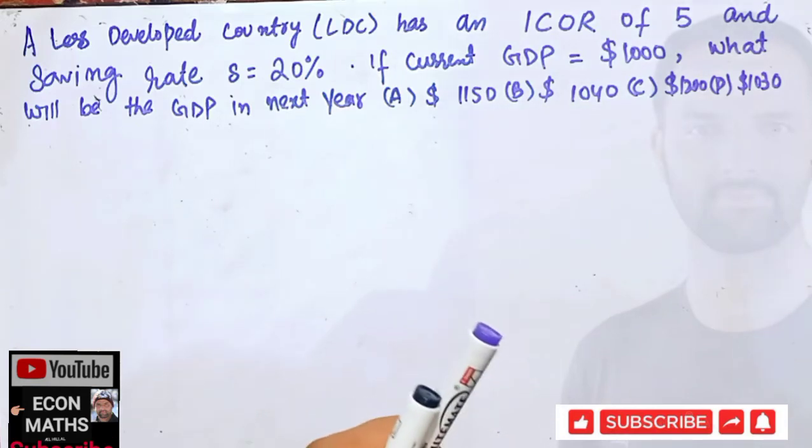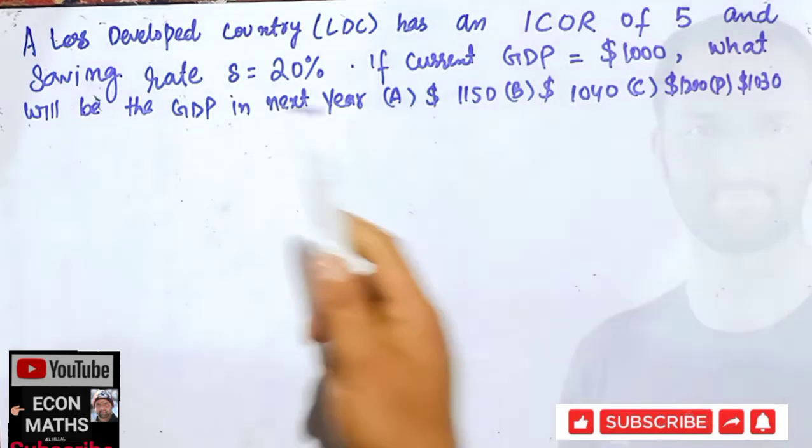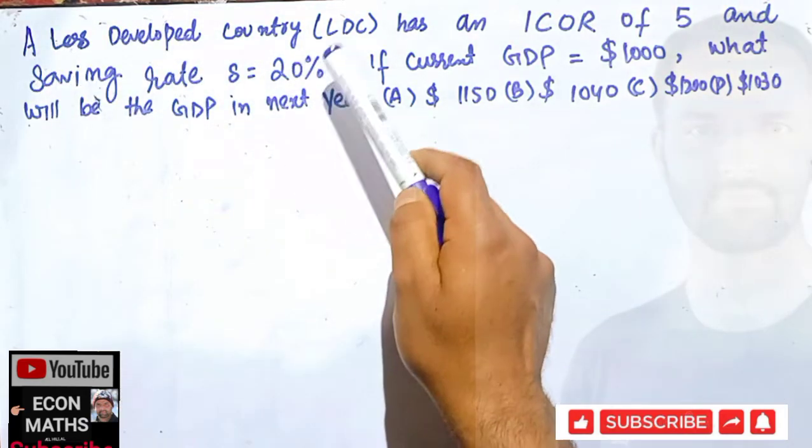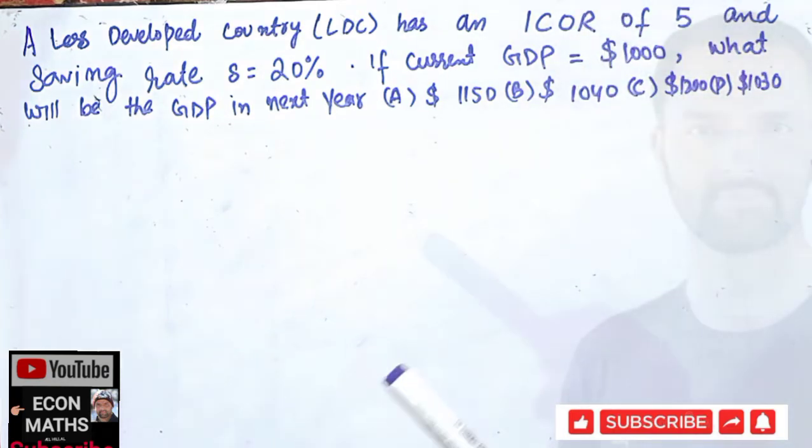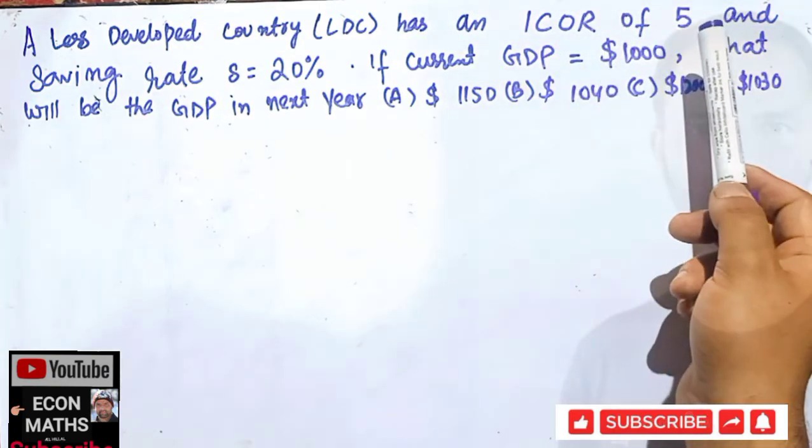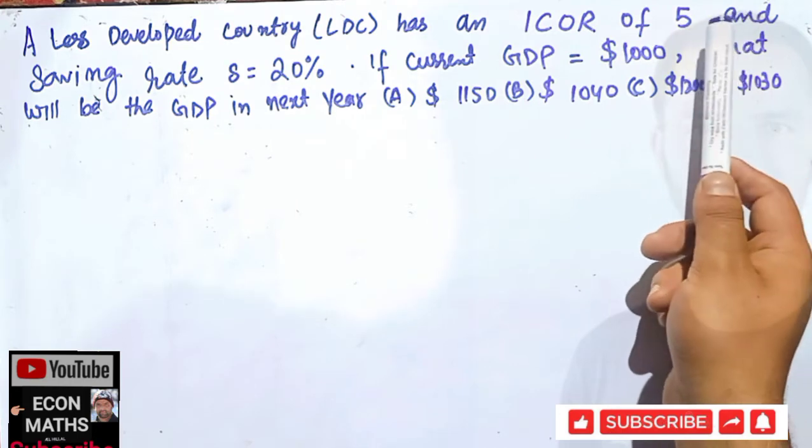In this video we will solve a problem on finding the GDP. The question is like this: a Less Developed Country (LDC) has an incremental capital output ratio of 5. That means five units of capital is used